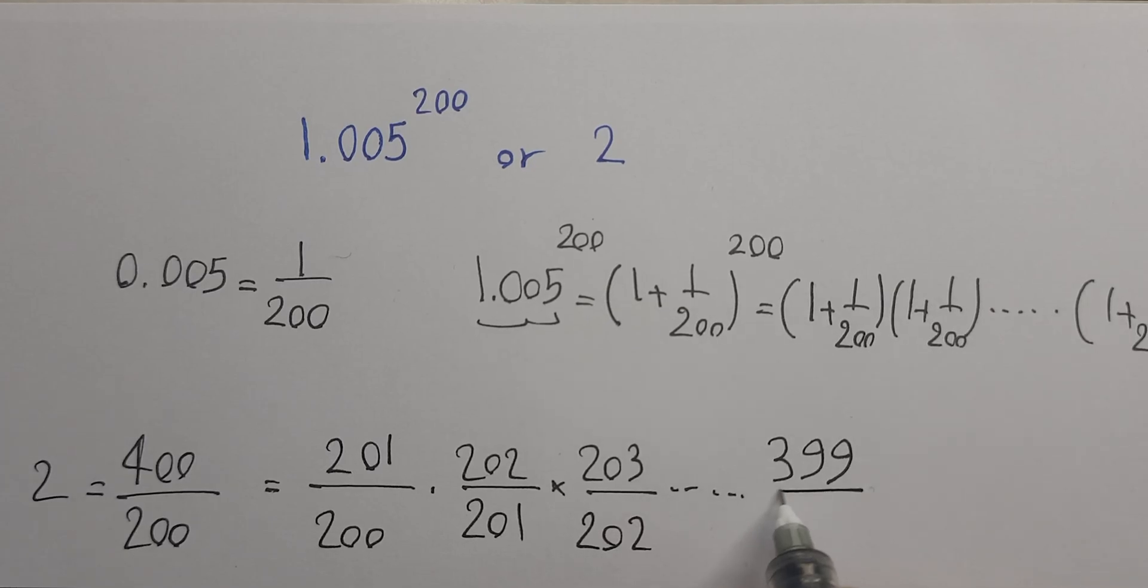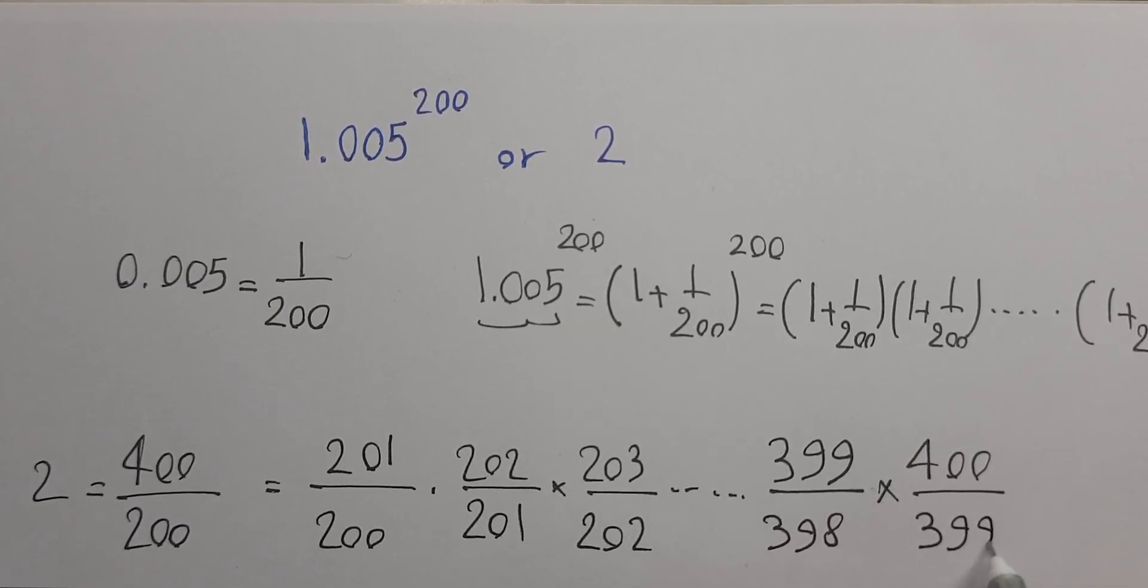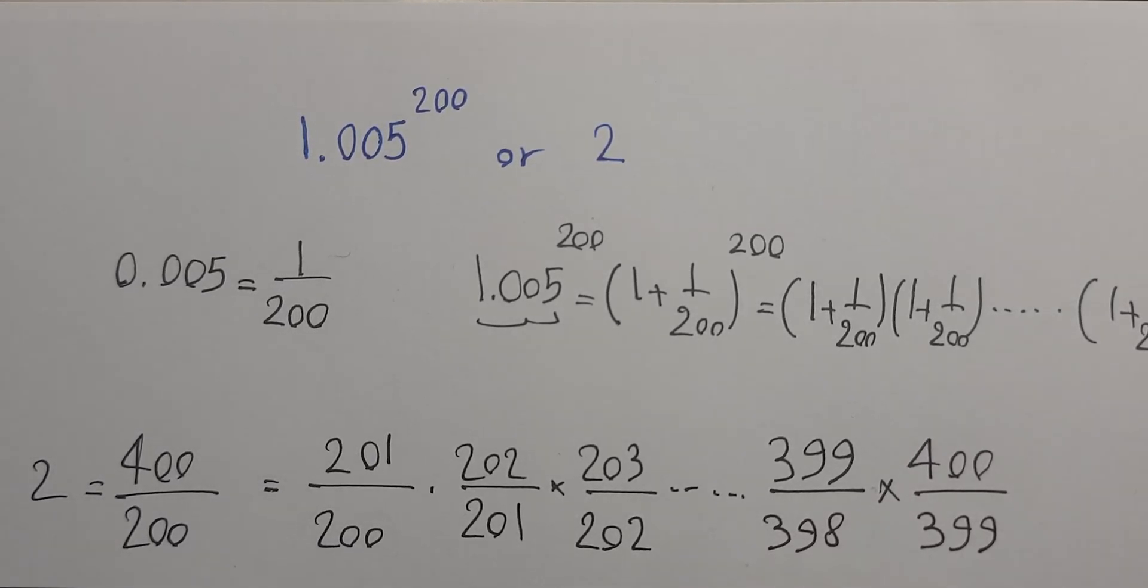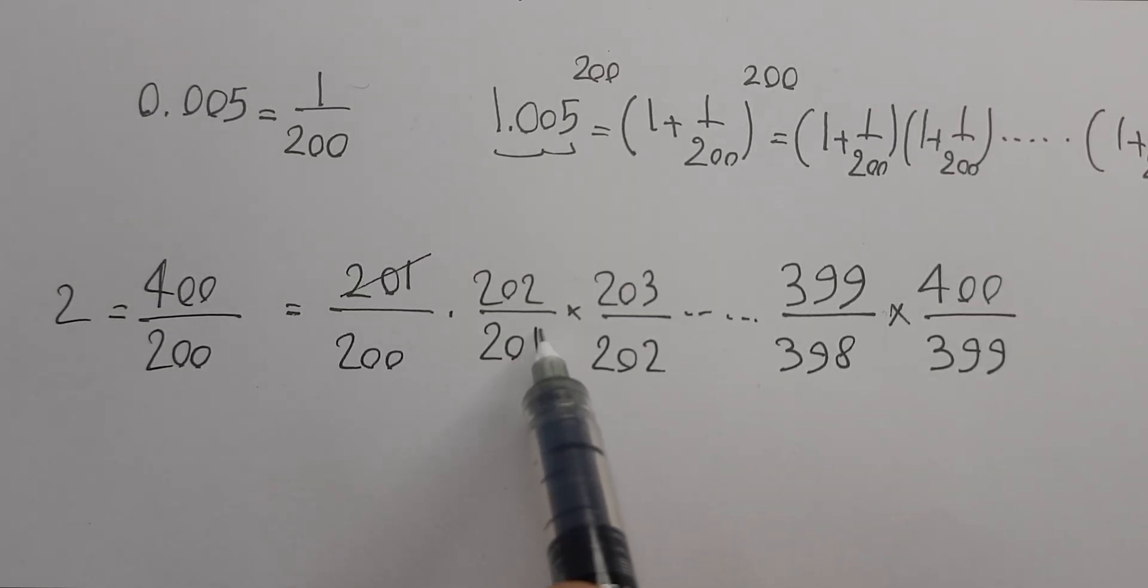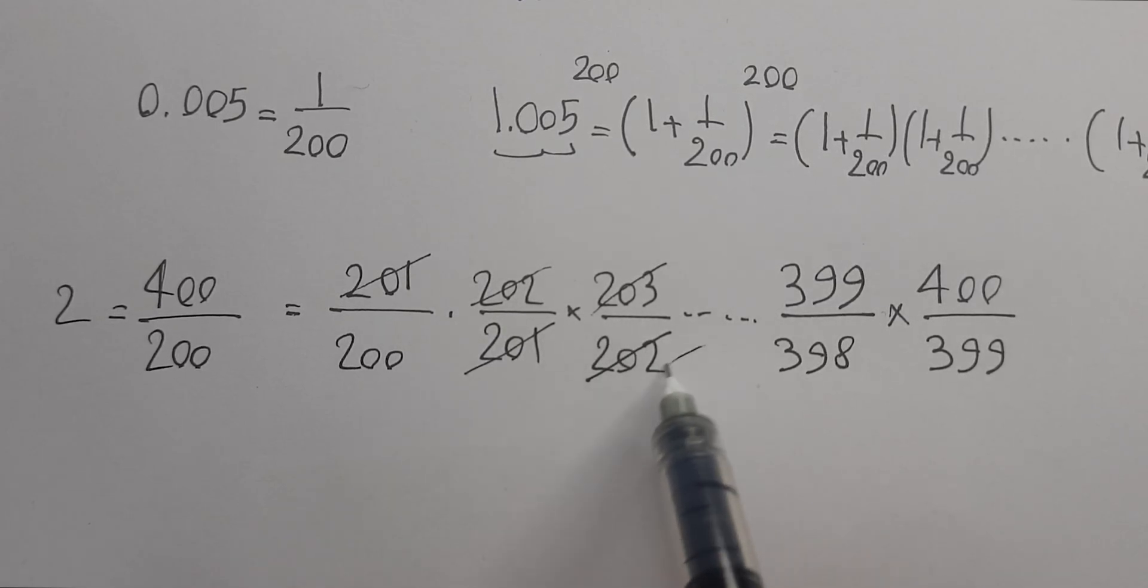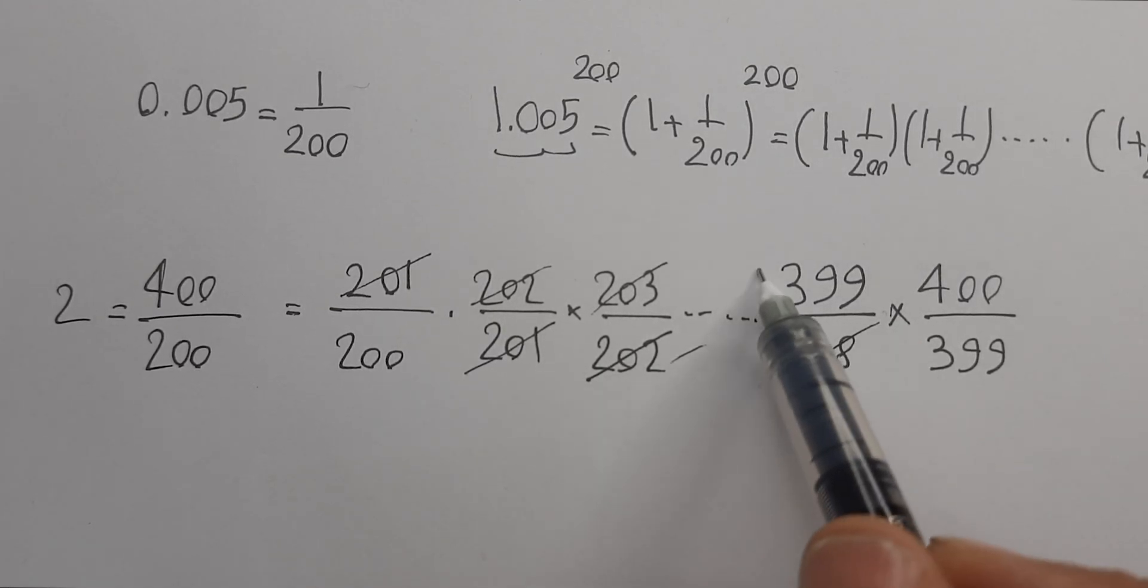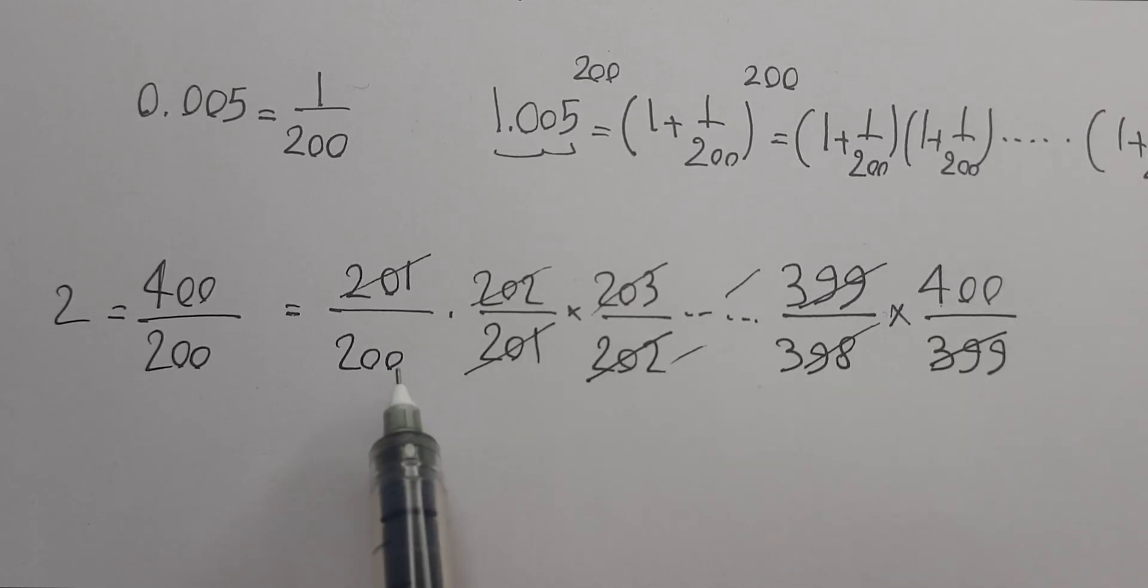...times (399/398) times (400/399). If we cancel out, we get 400/200.